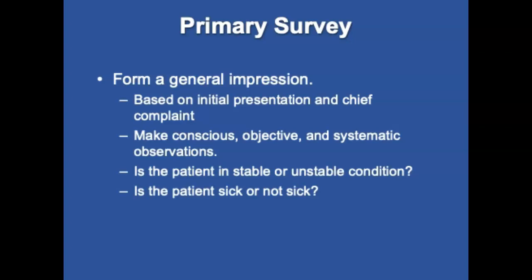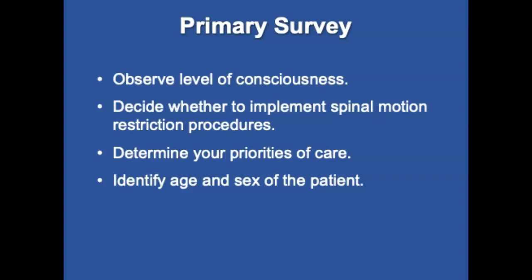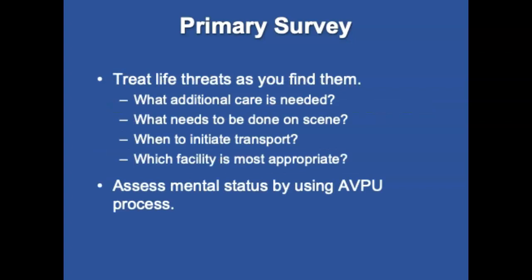The general impression is your overall initial impression that determines priority of patient care. It's based on the surroundings, the mechanism of injury, signs and symptoms, and chief complaint. It enables you to identify threats to the ABCs. Avoid tunnel vision and make conscious, objective, and systematic observations. Answer two questions: Is the patient in stable or unstable condition, and is the patient sick or not sick? The level of consciousness may provide the first clue to alterations in the patient's condition. Decide whether to implement spinal immobilization, identify the mechanism of injury or nature of illness, and treat life threats as you find them. Decide what additional care is needed on scene versus when to initiate transport and which facility is most appropriate.